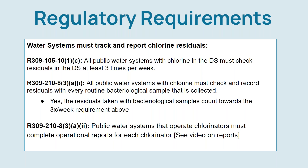Let's begin by quickly going over the regulations. First, R309-105 requires all water systems with chlorine in the distribution systems to check and record free chlorine residuals at least three times per week. Second, R309-210 requires systems with chlorine to measure and record the free chlorine residual with every routine bacteriological sample. The chlorine residuals taken with the bacteriological samples can be used to satisfy the three residuals per week requirement.